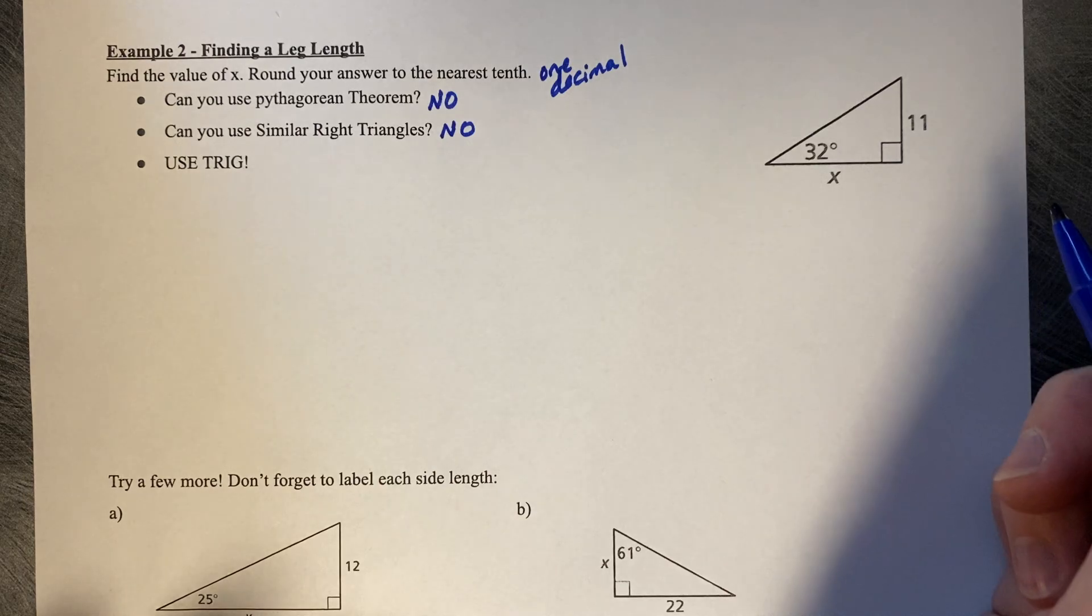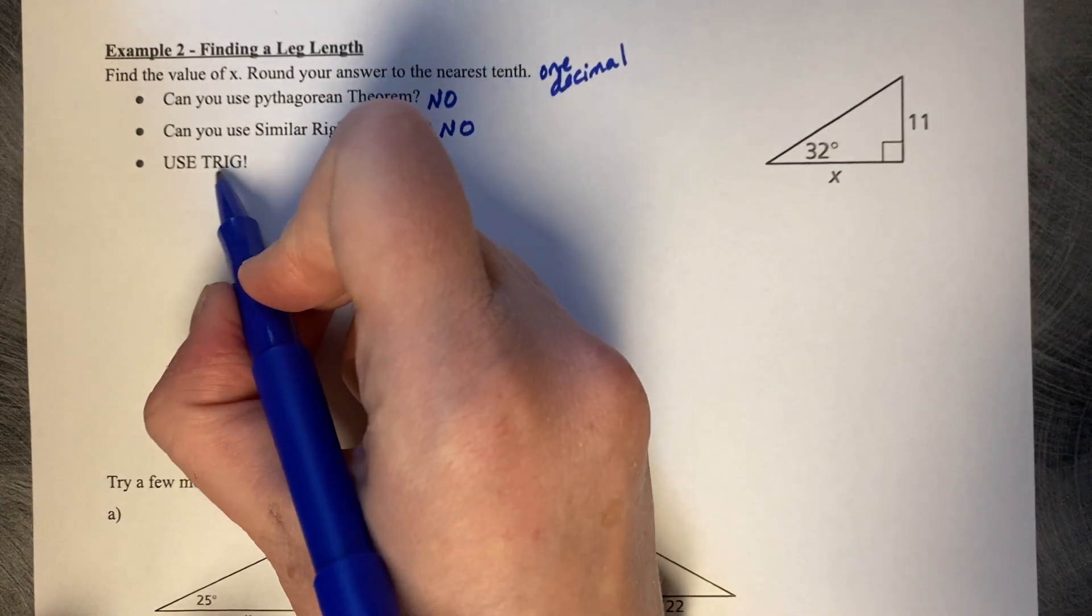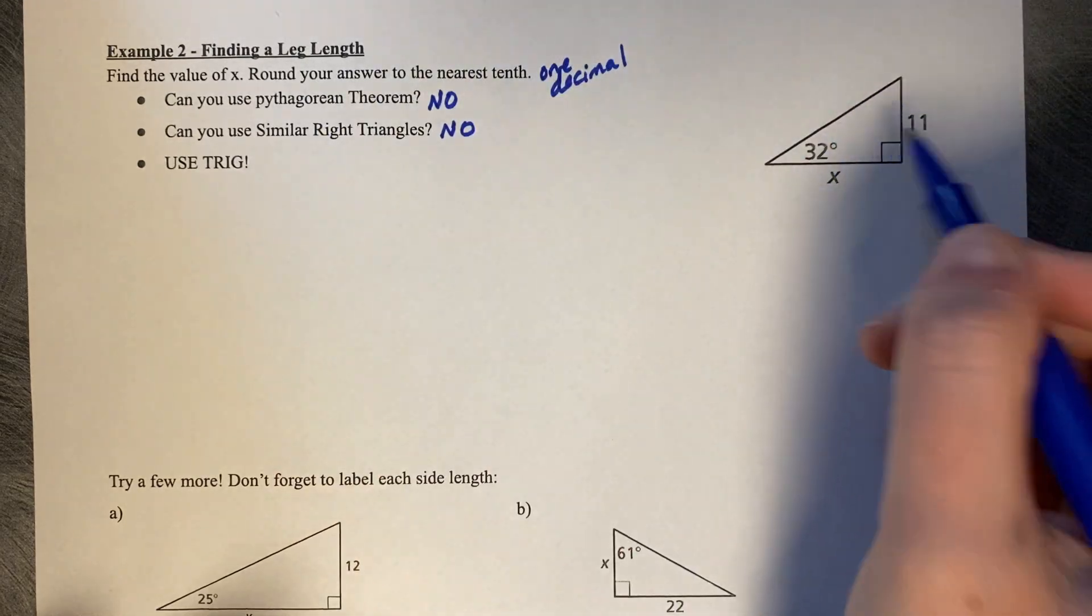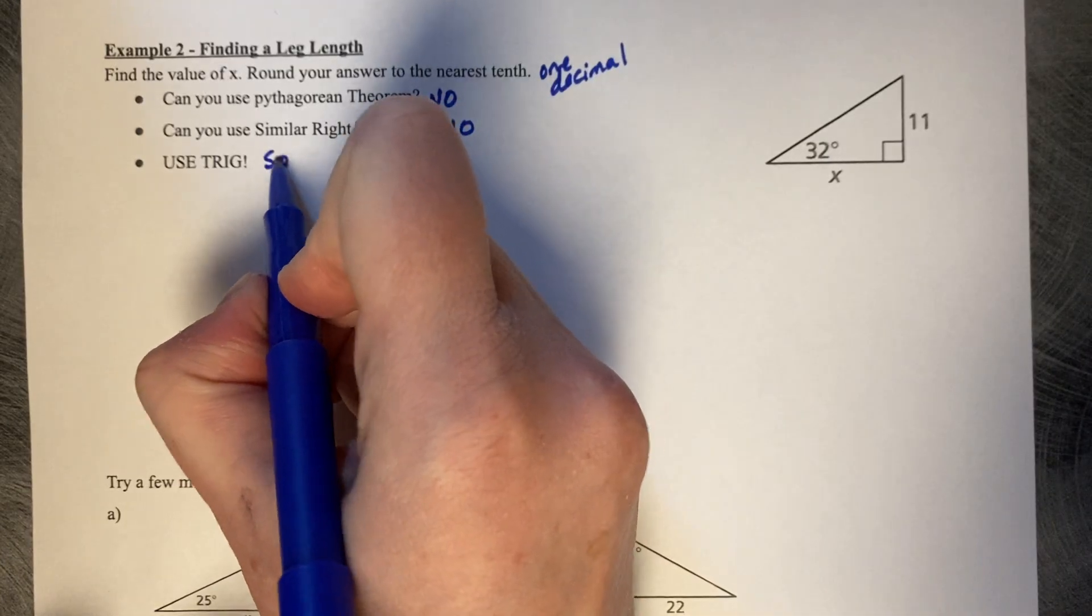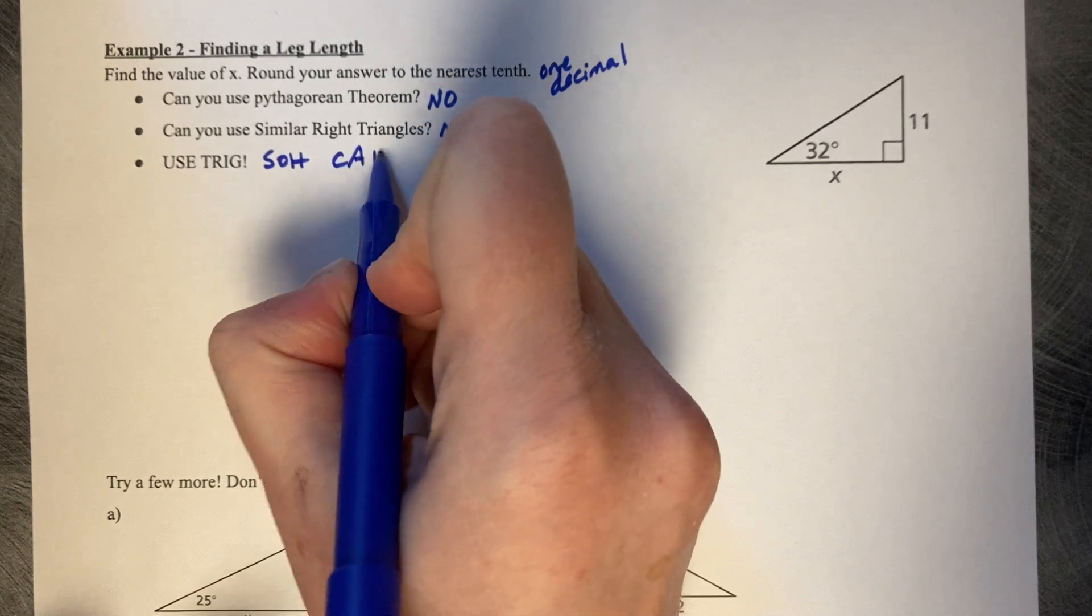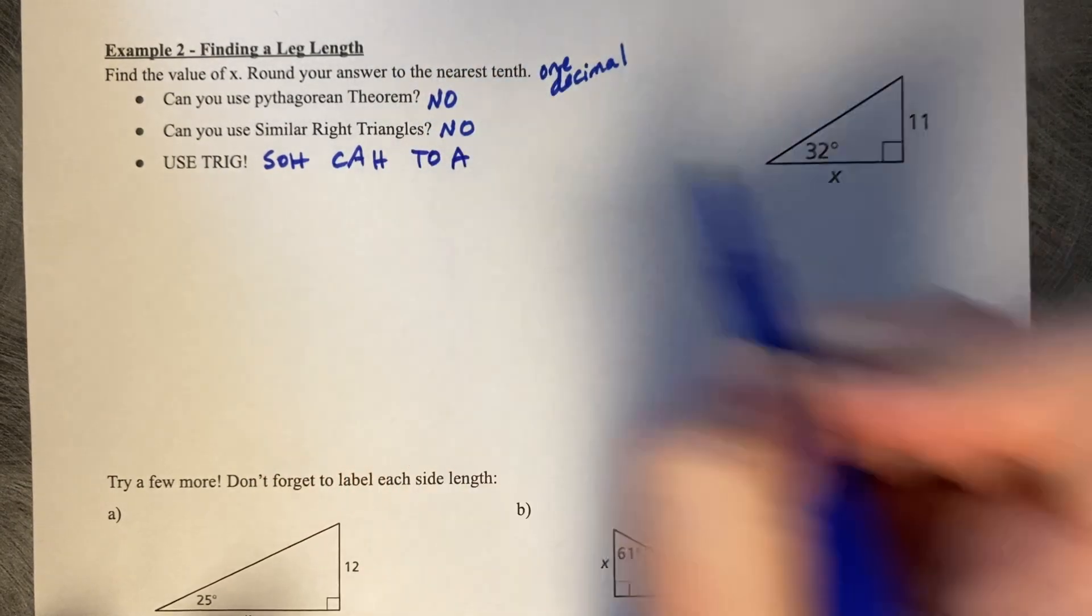What's the third tool in the toolbox? Our third tool is trig, or trigonometry. Any time you see that word or feel like you might need to use it, you should write down the phrase SOHCAHTOA.